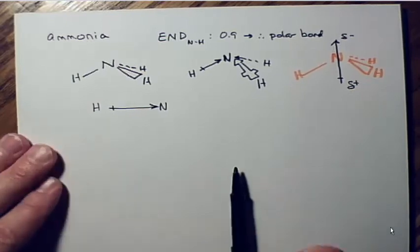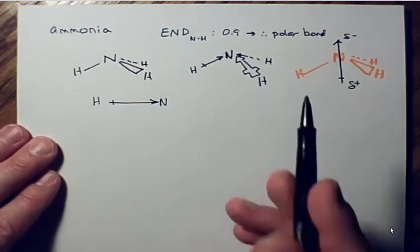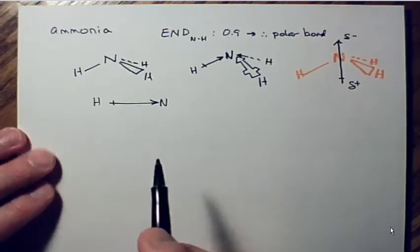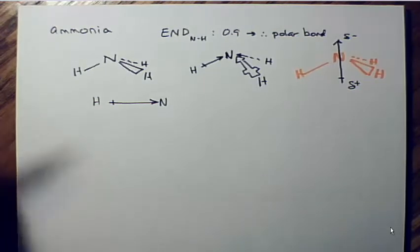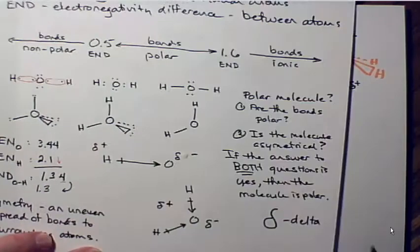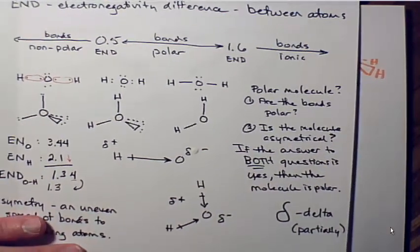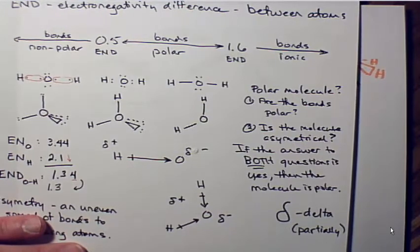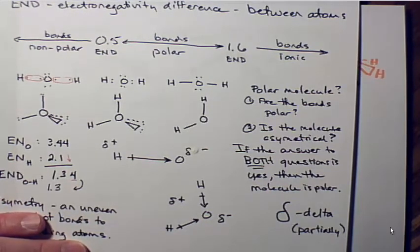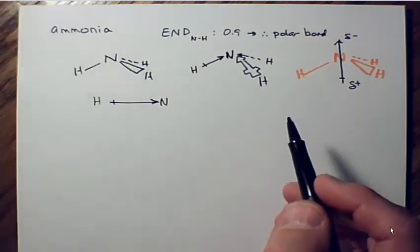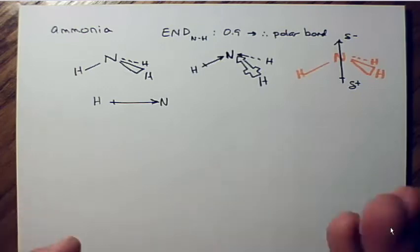The lowercase Greek letter delta in this context means 'partially.' So delta-negative means partially negative. Completely negative would be like an anion with a full negative charge where an electron has been completely pulled away. Partially charged just means the atom isn't completely pulling the electron away, but is holding on to them more tightly — the electrons are spending more time over there.